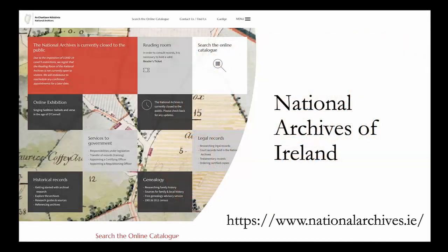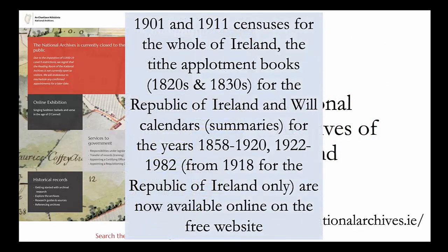The National Archives of Ireland has free access to the 1901 and 1911 censuses for the whole of Ireland, the Tithe Applotment books from the 1820s and 1830s for the Republic of Ireland, and will calendar summaries for the years 1858 to 1920 and 1922 to 1982, although will summaries are available only from 1918 for the Republic of Ireland.